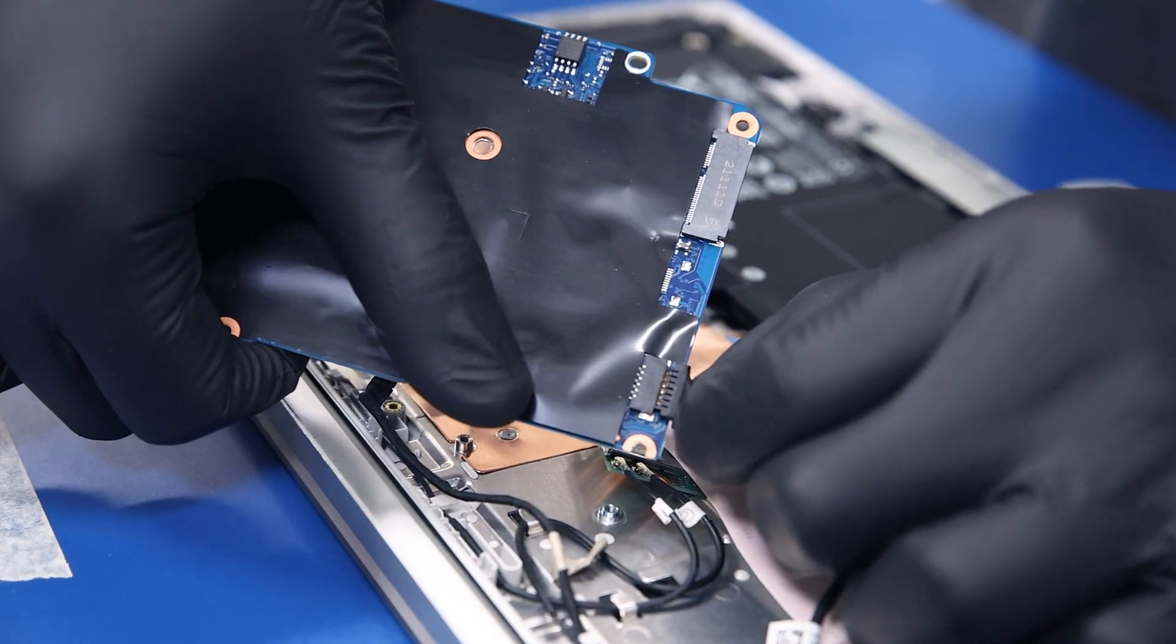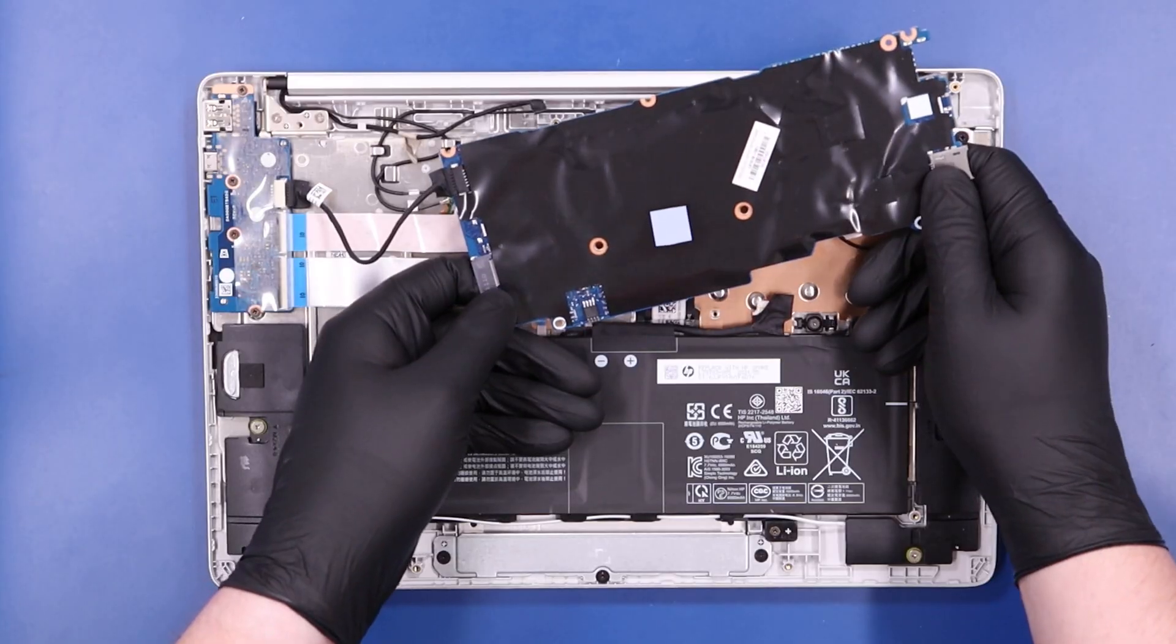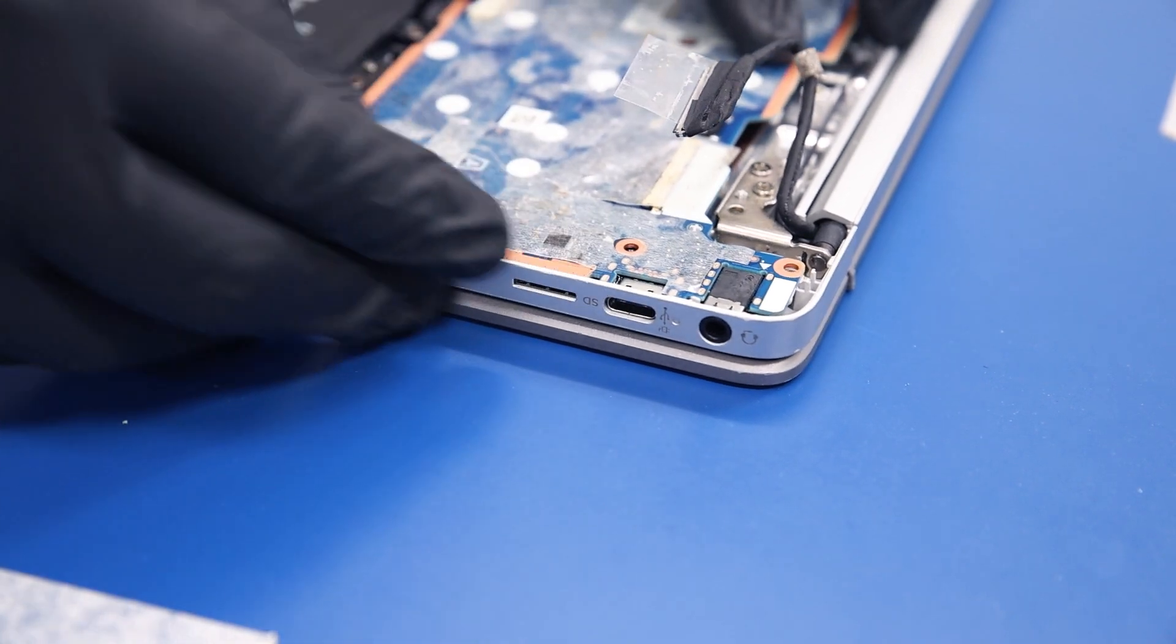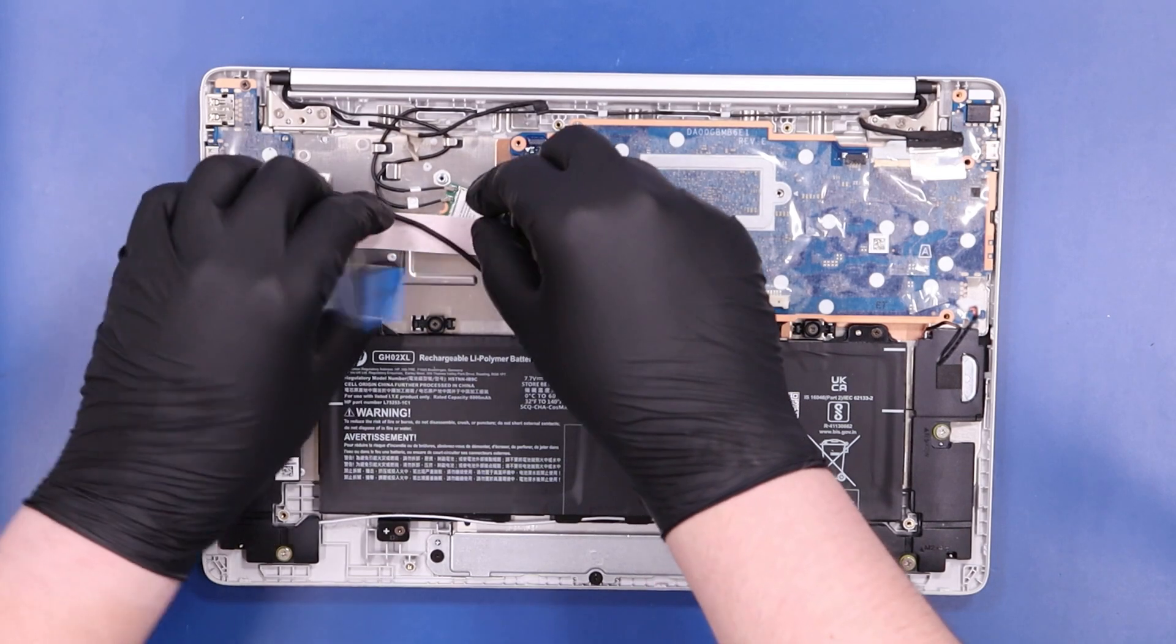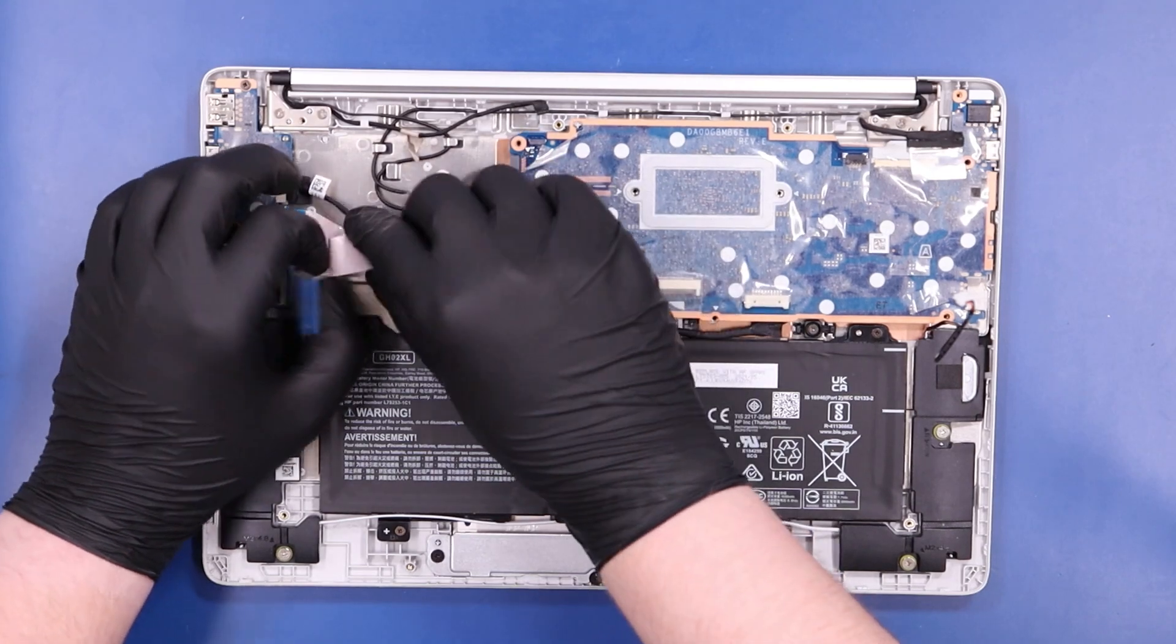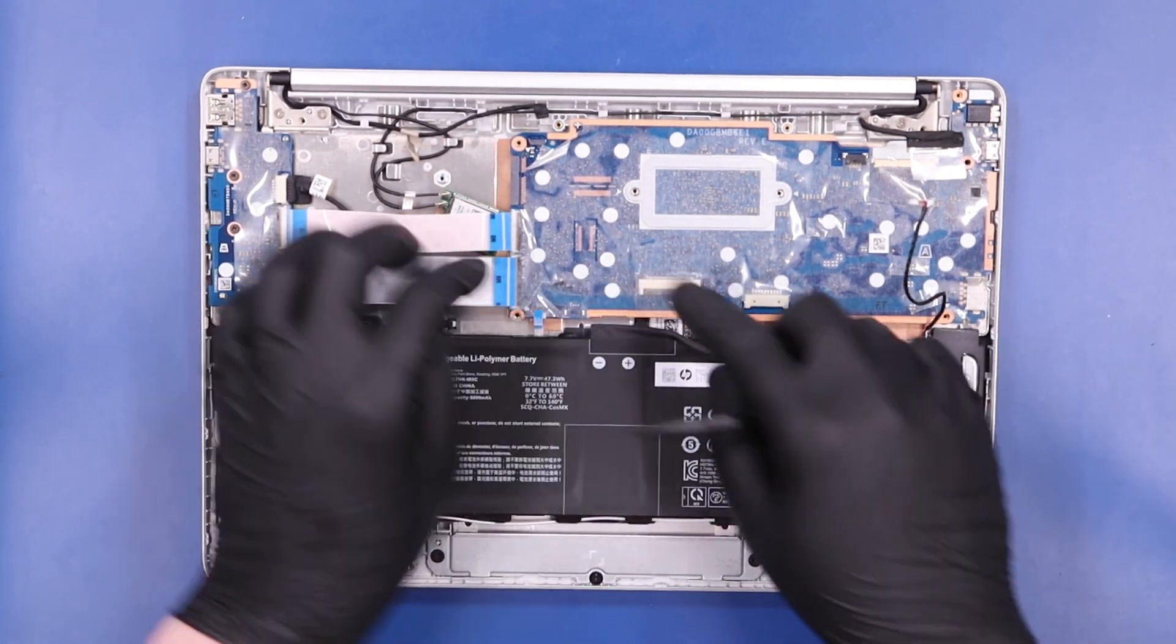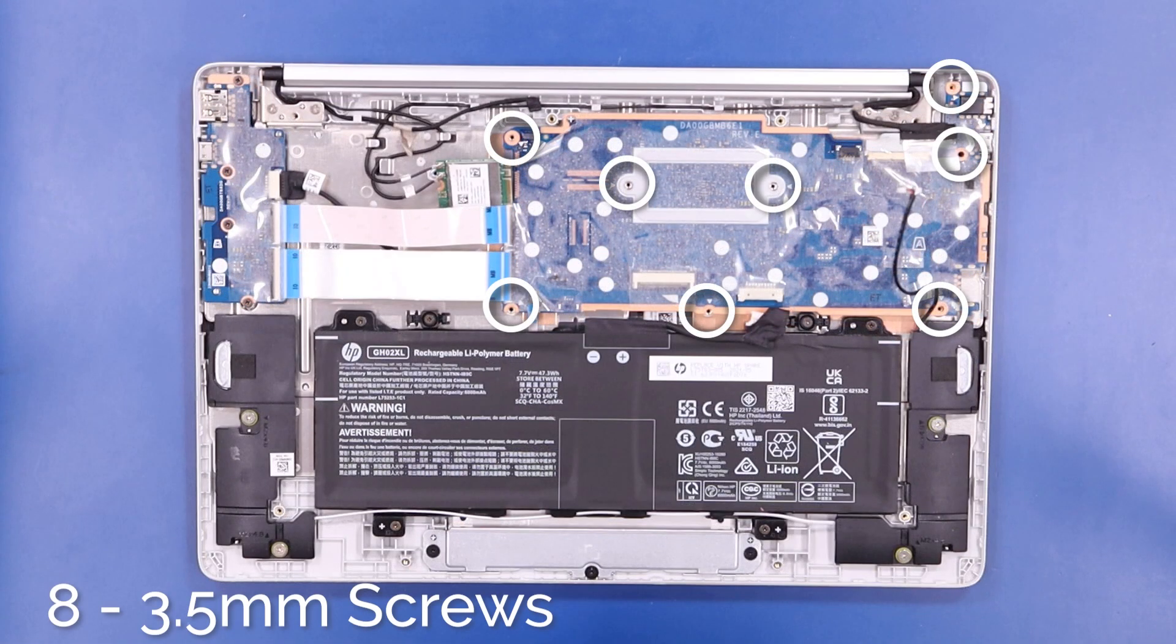Plug the daughterboard cable underneath the motherboard and replace the motherboard back into its port slots. Be sure to get all the cables out from underneath. Replace the eight 3.5mm screws back into the motherboard.